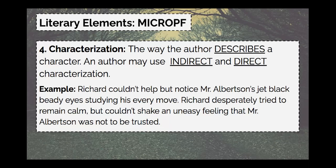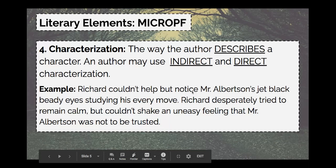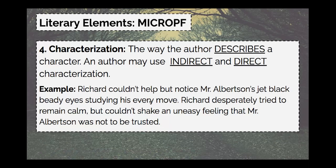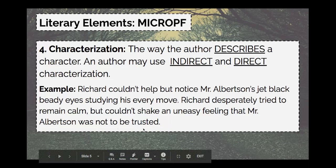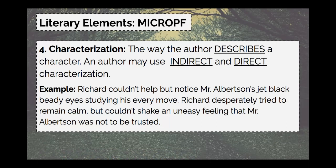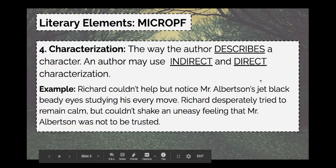Here's a characterization example: 'Richard couldn't help but notice Mr. Albertson's jet black beady eyes studying his every move. Richard desperately tried to remain calm, but couldn't shake an uneasy feeling that Mr. Albertson was not to be trusted.' We have details about appearance — the jet black beady eyes — which covers Looks. Mr. Albertson studying Richard's every move covers Actions. Richard desperately trying to remain calm shows his internal state, and the uneasy feeling that Mr. Albertson cannot be trusted hints that we should be suspicious of him. Now we're focusing on how characterization is utilized to help create suspense for the reader.